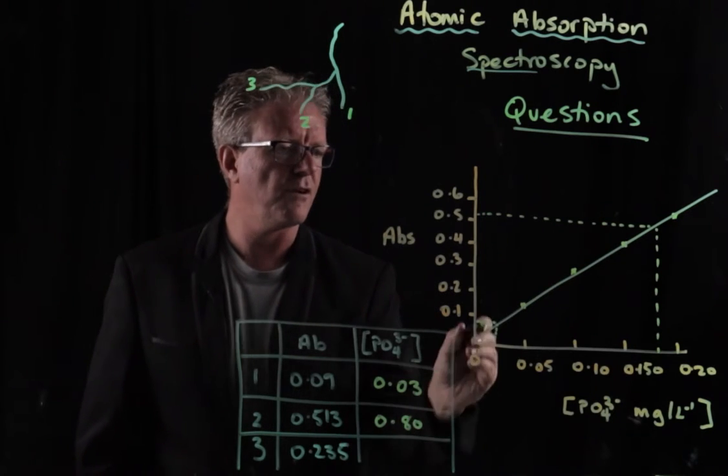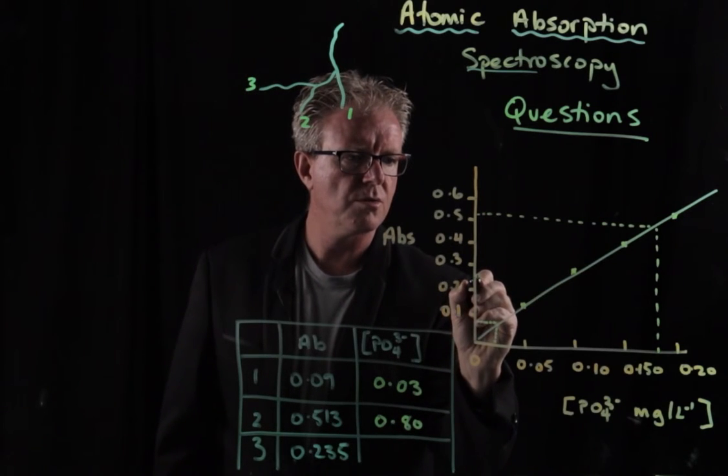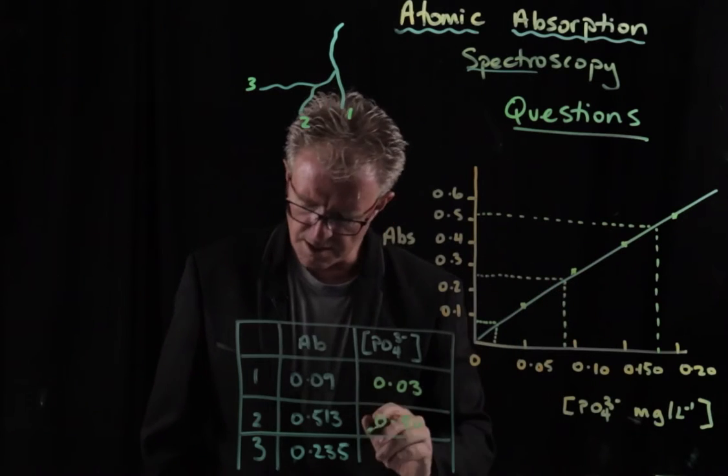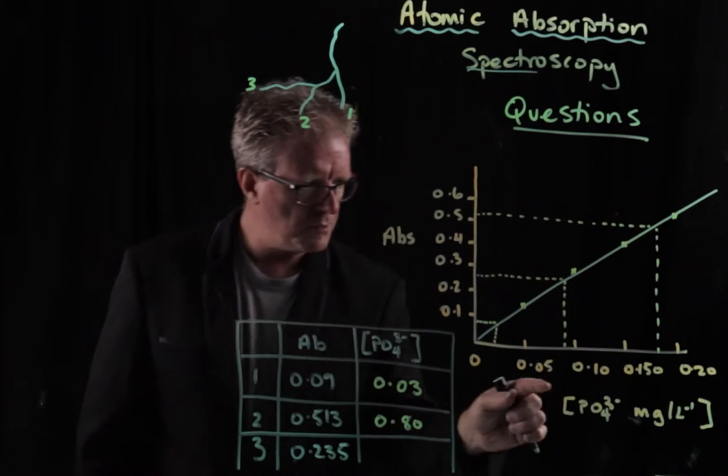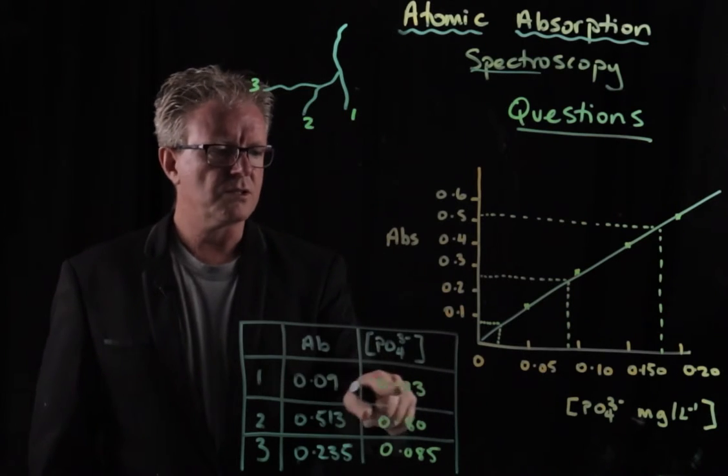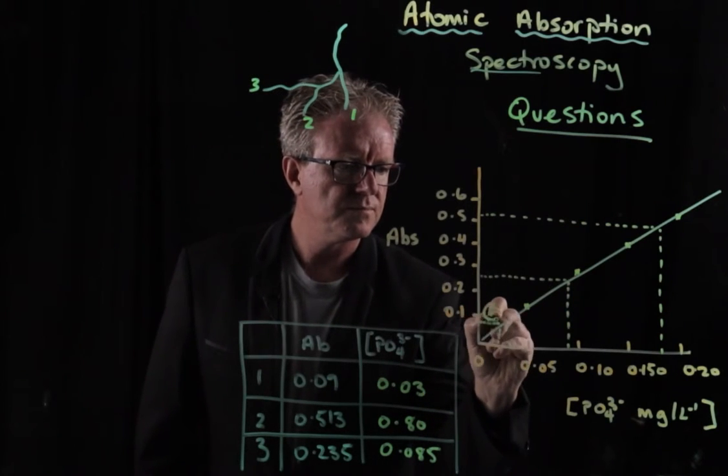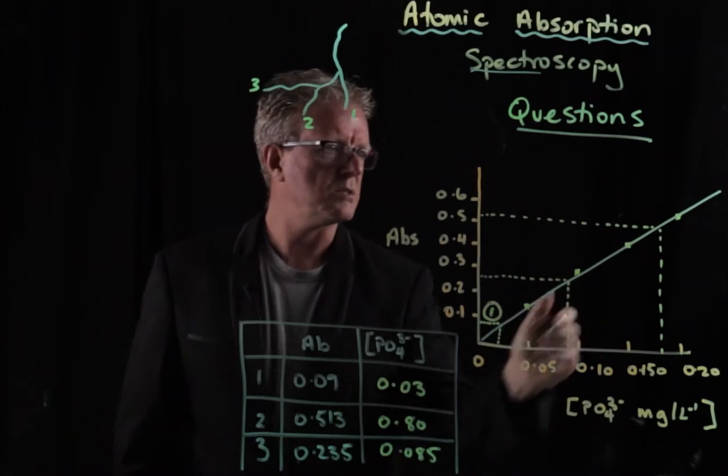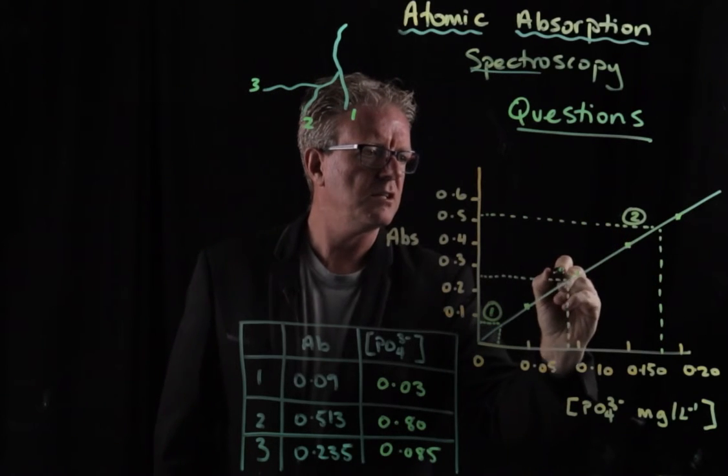And then 0.235, 0.235, coming down there. And 0.235 is about 0.085. So there we have stream 1, let's just write that that was stream 1. And stream 2 was up here, and then stream 3.